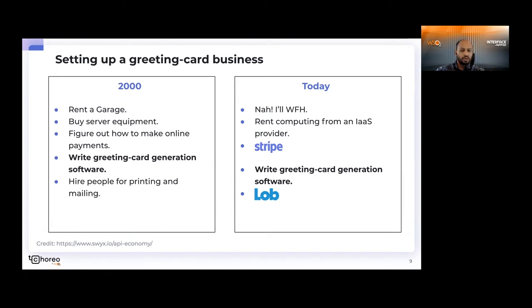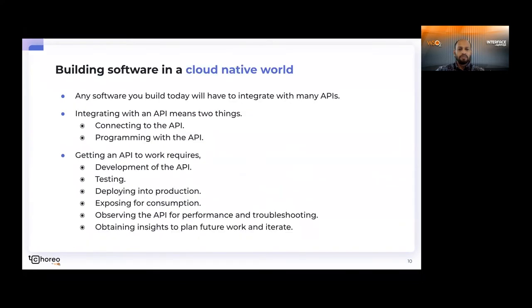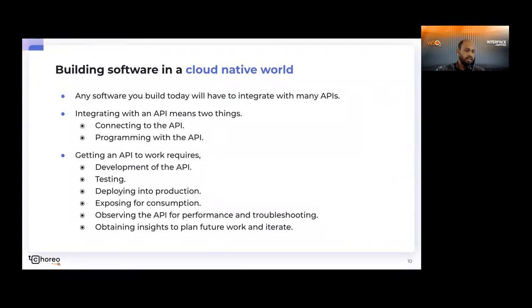Today we are going to be focusing on the highlighted part in this slide, which is about writing the greeting card generation software — how would you do it today compared to two years before? So effectively, any kind of software that we are going to build today is going to integrate with one or more APIs. If you're going to utilize Stripe for making payments, your software needs to integrate with Stripe. If you're going to utilize DocuSign, Lobb, or any other service like that, your software needs to integrate with all of that. It may need to integrate with Salesforce, accounting systems, and so on.